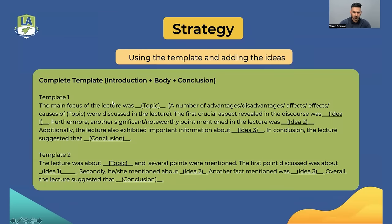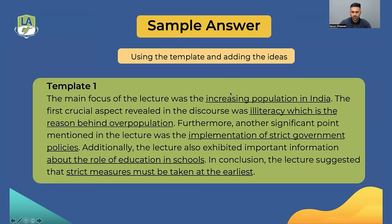There are two templates for Summarize Spoken Text. Template one: 'The main focus of the lecture was [topic]. A number of advantages/disadvantages of the topic were discussed. The first crucial aspect revealed in the discourse was [phrase]. Furthermore, another significant point mentioned in the lecture was [phrase]. Additionally, the lecture also exhibited important information about [phrase]. In conclusion, the lecture also suggested [phrase].' Template two: 'The lecture was about [topic] and several points were mentioned. The first point discussed was [phrase]. Secondly, he mentioned [phrase]. Another fact mentioned was [phrase]. Overall, the lecture suggested [phrase].'